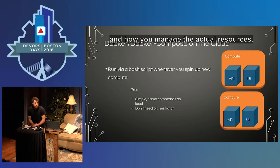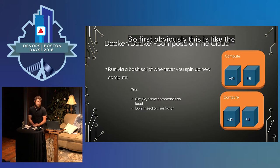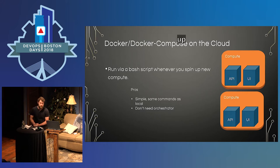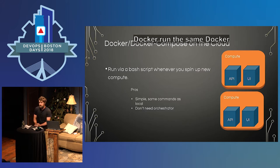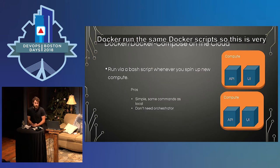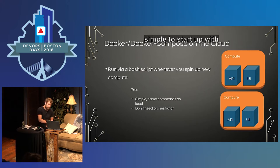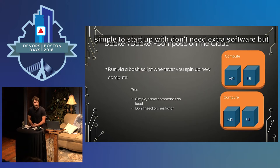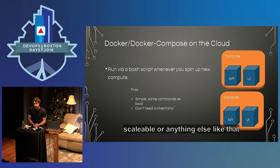First, the naive way — Docker Cloud or Docker Compose. Simply when you spin up your compute, you can run the same commands you did locally: install your container engine, Docker, and run the same Docker scripts. This is very simple to start with, doesn't need an orchestrator or any extra software. But it's not going to be really scalable since all your containers scale up the same way — it's reliant on the actual compute instances to scale up rather than scaling containers themselves, so it's going to be a lot more expensive and a lot slower.